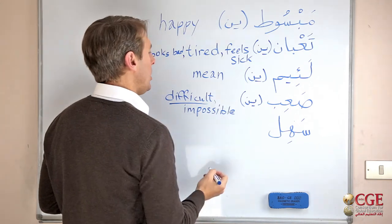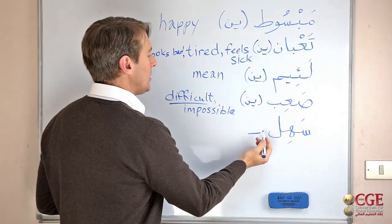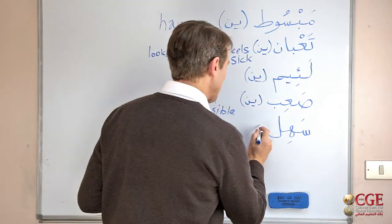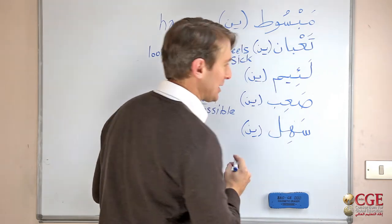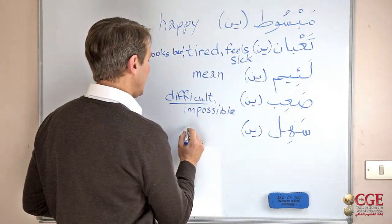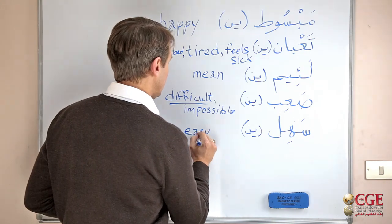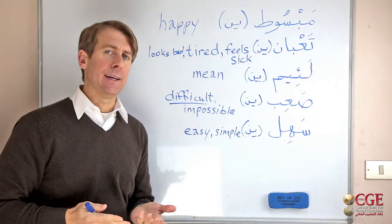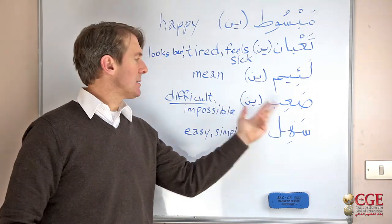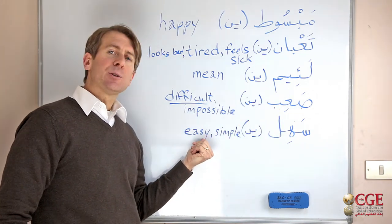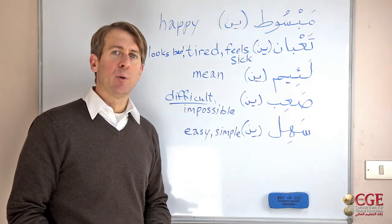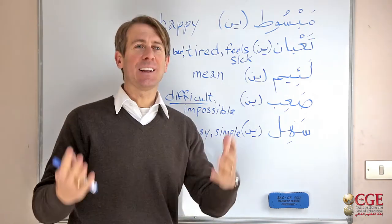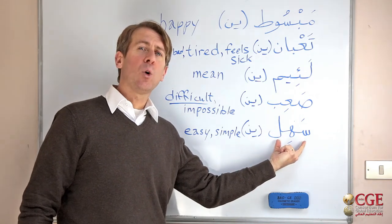Now the antonym of Sa'b is Sahl, meaning easy or simple. It's used for people and things, basically in the same way as Sa'b. For a person, 'Demo Khafif' means his blood is light — he's easy to get along with. But Sahl more specifically means easy to deal with, like in a business relationship or any kind of negotiation.